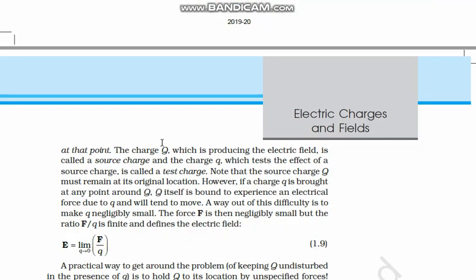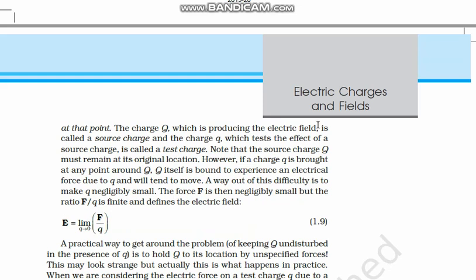If we put a unit positive charge at point B, the force that unit positive charge experiences is called the electric field. The charge Q is producing the electric field and is called the source charge. The charge small q which tests the effect of the source charge is called the test charge. So there are two types of charges: source charge and test charge.